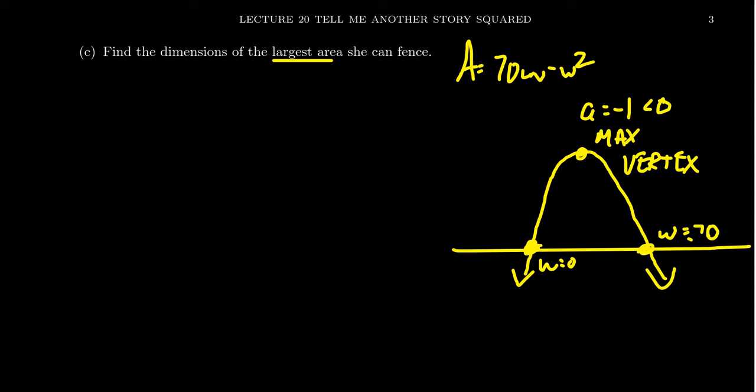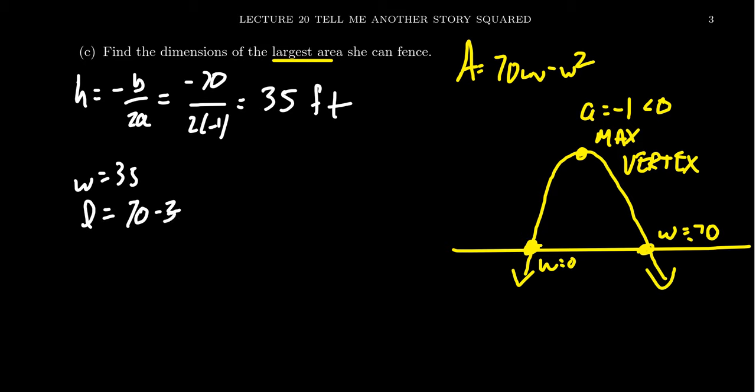The vertex, the x coordinate can be found as h equals negative b over 2a, which using the values we have gives us negative 70 over 2 times negative 1, that gives us 35 feet. This is the dimension of the rectangle that will make it the maximum. This is saying that the width should be 35 feet. If the width is 35 feet, how big should the length be? The length is equal to 70 minus w, which in this case would be 70 minus 35, which is likewise 35 feet. So we see that the maximum garden would be obtained by 35 feet by 35 feet.